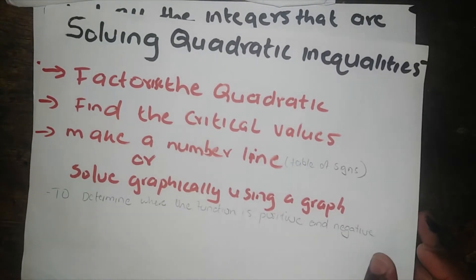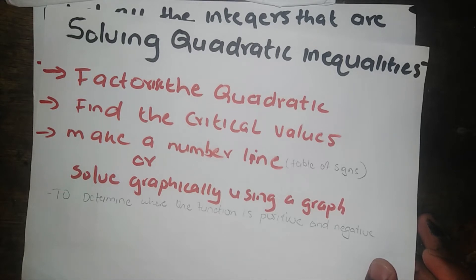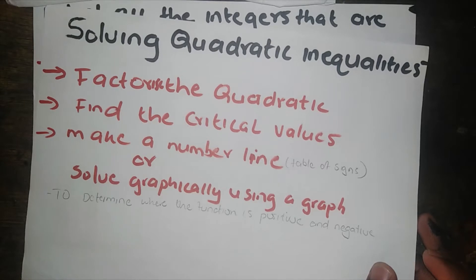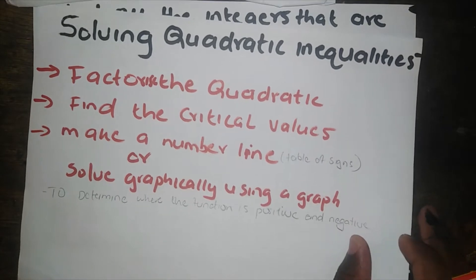Hi guys, today we are going to be solving quadratic inequalities. We have three steps that we need to follow. The first step is to visualize the quadratic. The second step is to find the critical values for the inequality. The third step is to make a number line — sometimes they call it the table of signs — or solve graphically using a graph. This shows where the function is positive and negative.